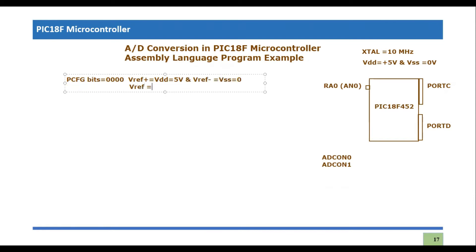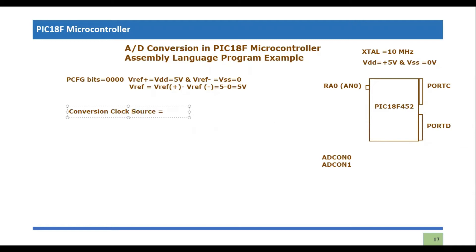The voltage range is Vref+ minus Vref-, which becomes 5V minus 0V, or simply 5V. Now, with PCFG bits done, the conversion clock frequency — I'm going to use Fosc divided by 4.